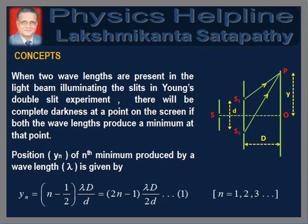Before proceeding to solve the problem, let us recall the related concepts. When two wavelengths are present in the light beam illuminating the slits in Young's double slit experiment, there will be complete darkness at a point on the screen only when both the wavelengths produce a minimum at that point. The position of the nth order minimum produced by a wavelength lambda is given in equation 1.